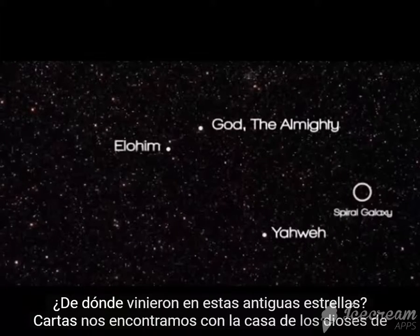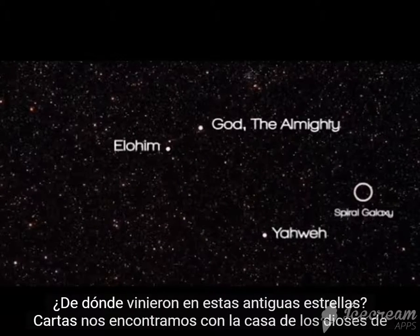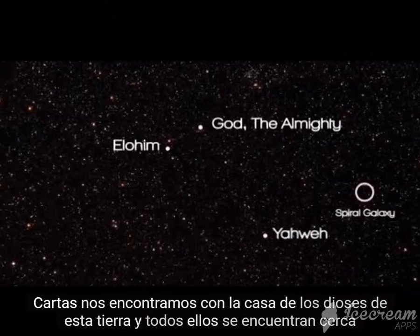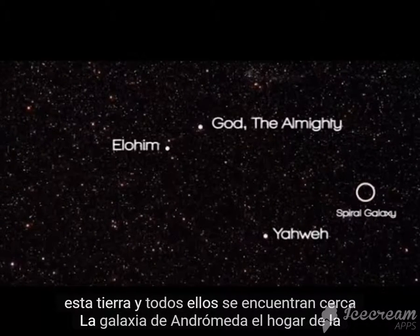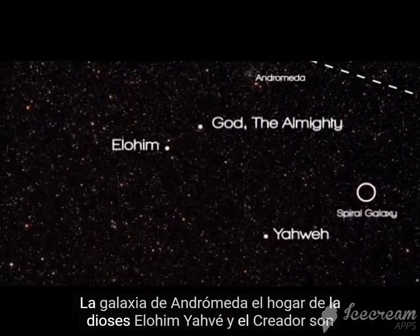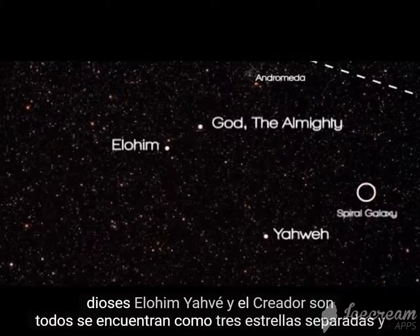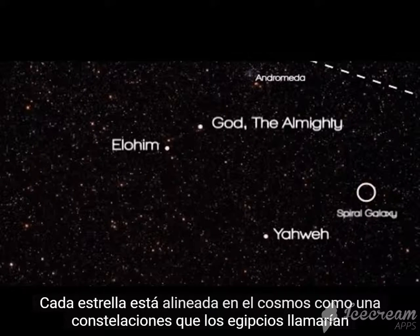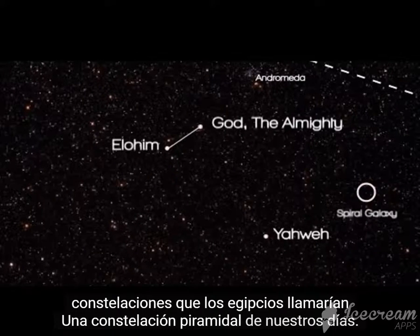In these ancient star charts, we find the home of the gods of this earth. The home of the gods — Elohim, Yahweh, and the Creator — are all found as three separate stars, and each star is aligned in the cosmos as a constellation the Egyptians would call a Pyramid constellation.